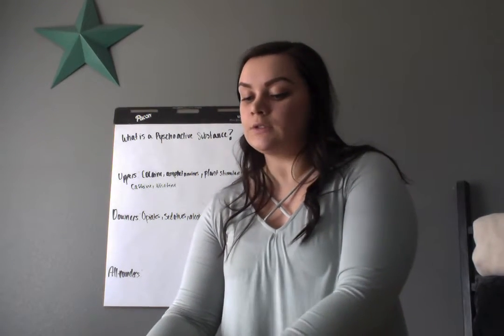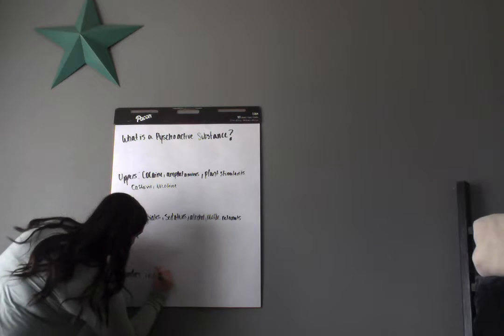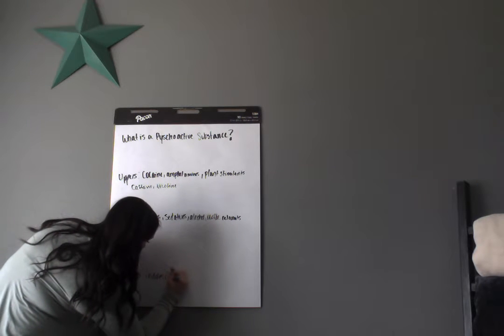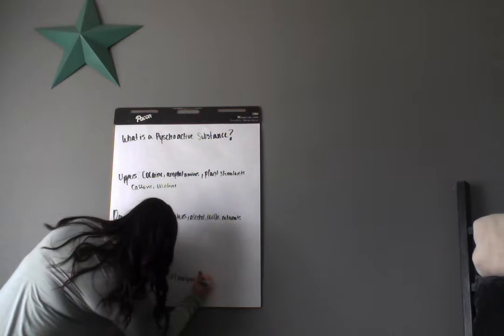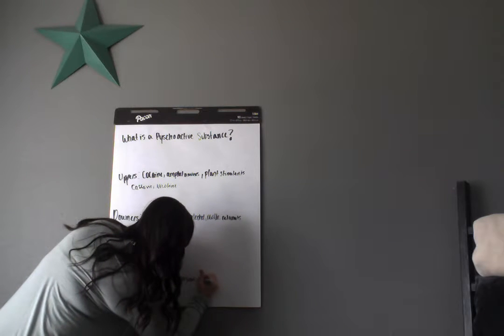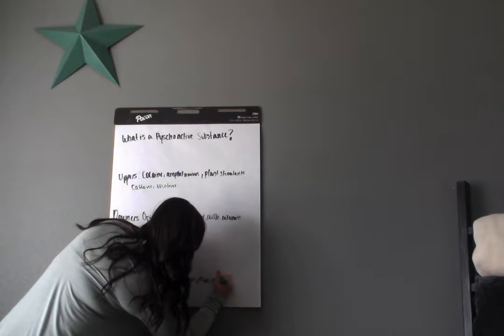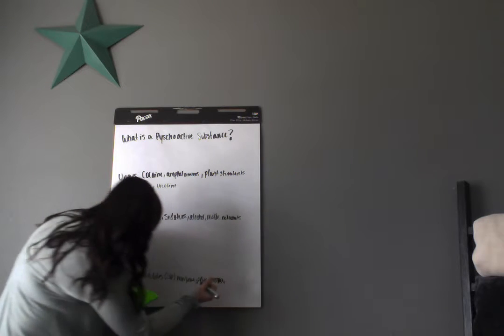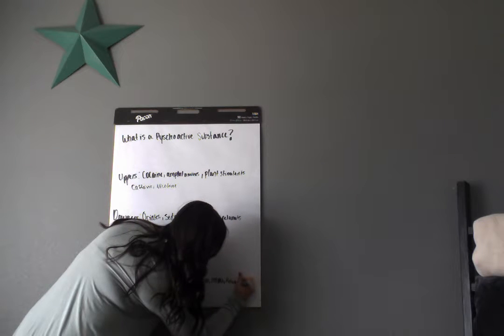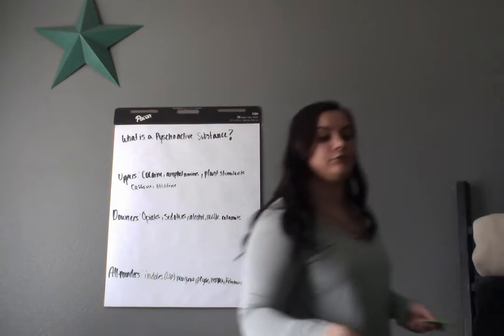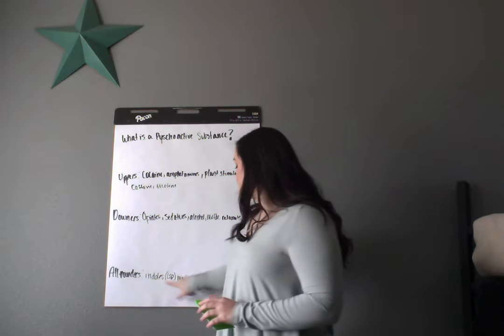So now we have the all-rounders. So all-rounders are going to be things such as indoles, which is going to be like LSD, and marijuana, and you have peyote, and MDMA. Oh, I forgot to put mushrooms on there.